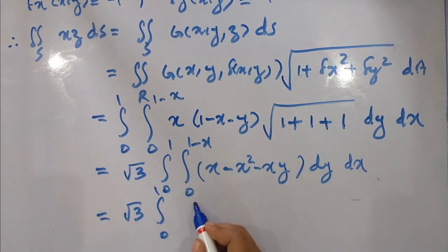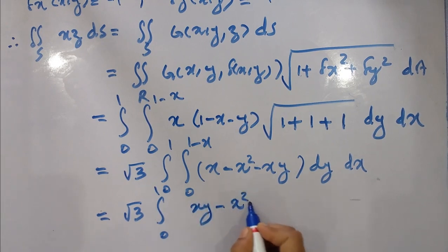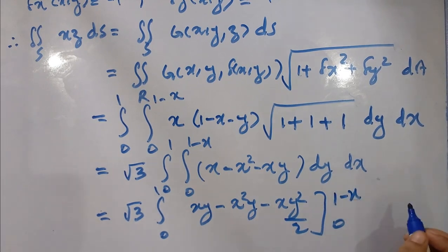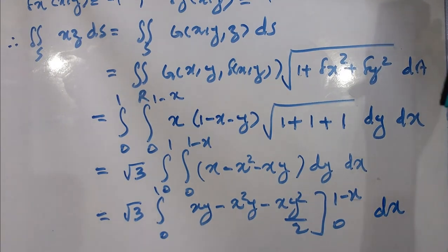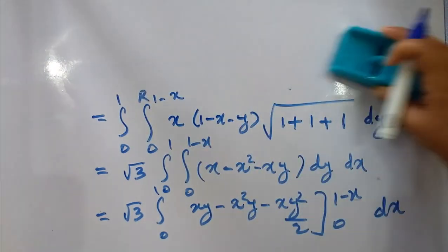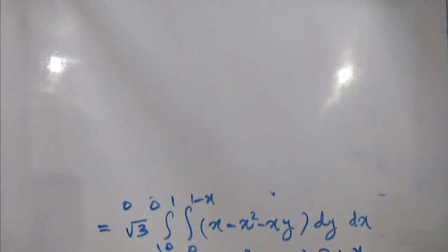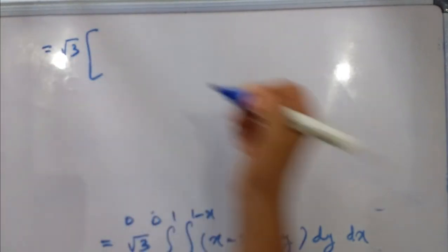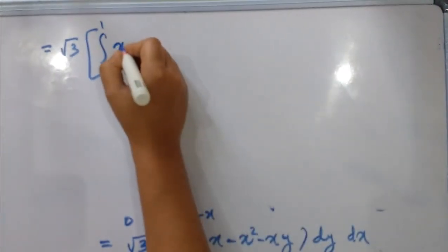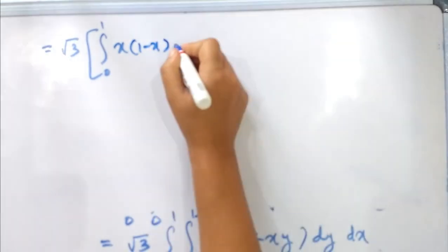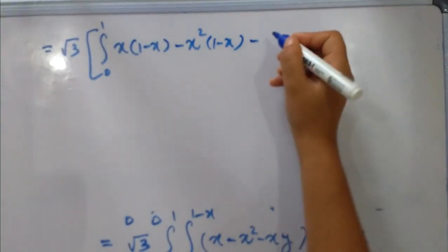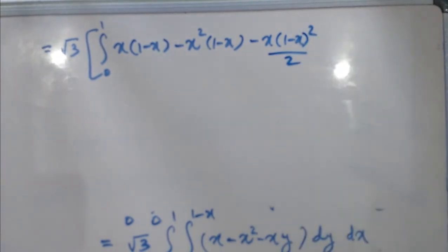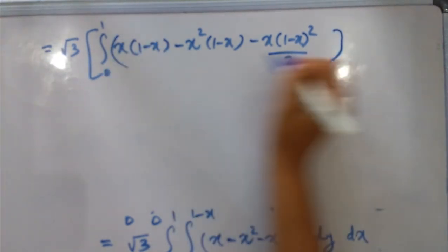We integrate x times z, where z equals f(x,y) equals 1 minus x minus y, giving x times (1 minus x minus y). Integrating with respect to y: x·y minus x²·y minus x·y²/2, evaluated from 0 to 1 minus x, then multiplied by square root of 3 and integrated from 0 to 1 with respect to x.